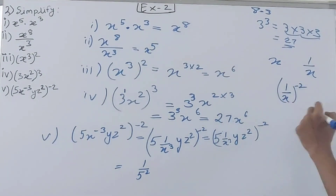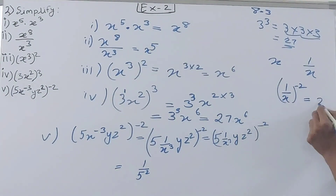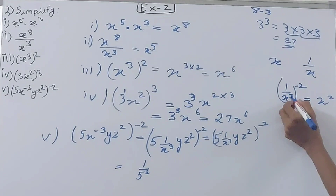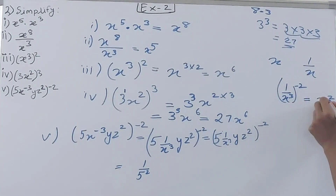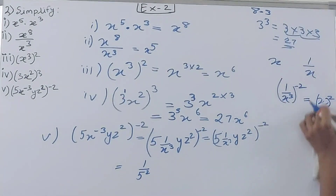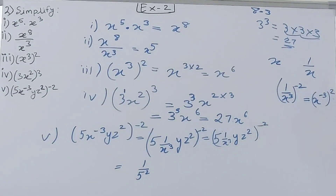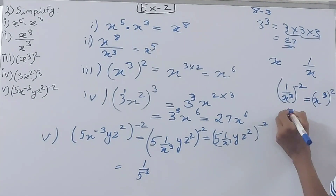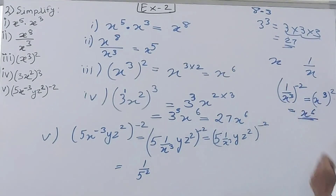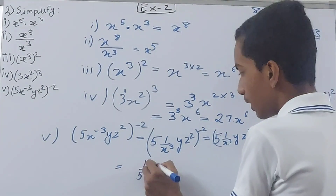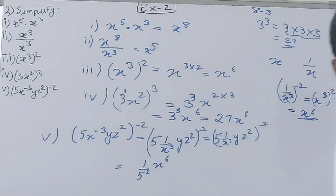Solving (1/x³) to the power minus 2 separately: x to the power minus 3, then to the power 2 — multiply: minus 3 times 2 gives minus 6, but since we reciprocated, the minus becomes plus, giving x to the power 6. So 1/x³ raised to minus 2 becomes x to the power 6. Combined so far: 1/5² times x⁶.